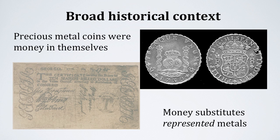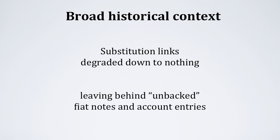Precious metal coins once circulated as money — they were money in themselves. Pieces of paper and equivalent bank account entries are money today. A long process led from one to the other. The pieces of paper and account entries started as substitutes that traded at fixed rates for precious metals, supposed to represent the metal units, which is why they came to be called money substitutes. However, after a centuries-long process, the links between metals and substitutes eroded until the last trace was gone in 1971.